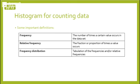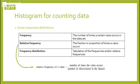The relative frequency is the fraction or the proportion of times that a value occurs. That is basically just dividing the number of times the value occurs by the number of observations in the data set. The frequency distribution is just the tabulation of the frequencies or the relative frequencies.